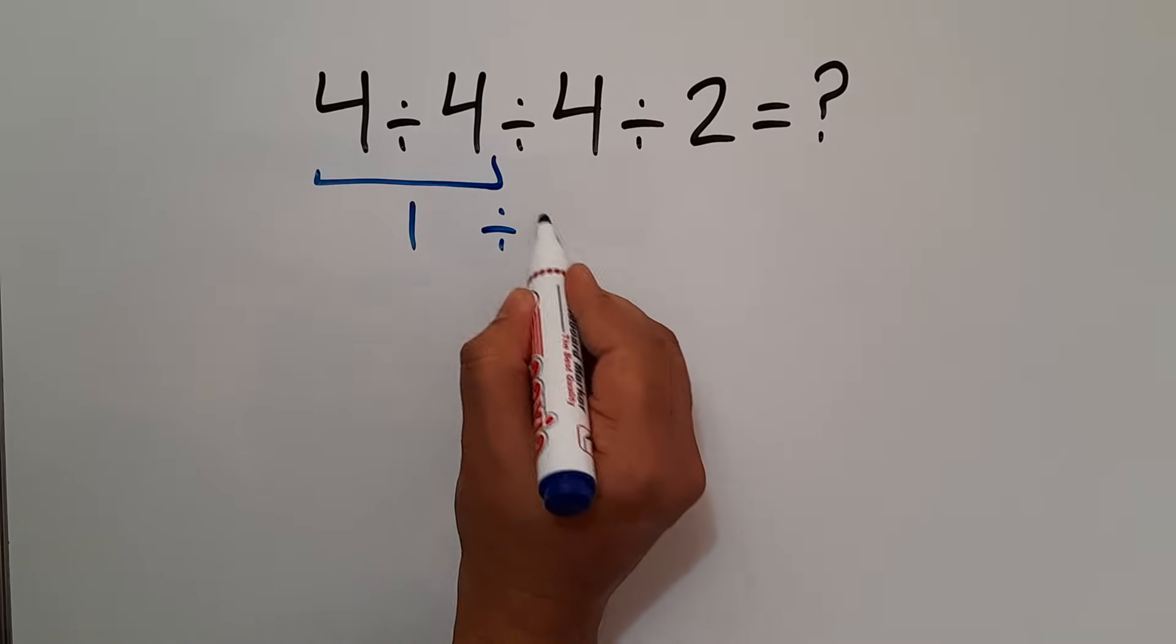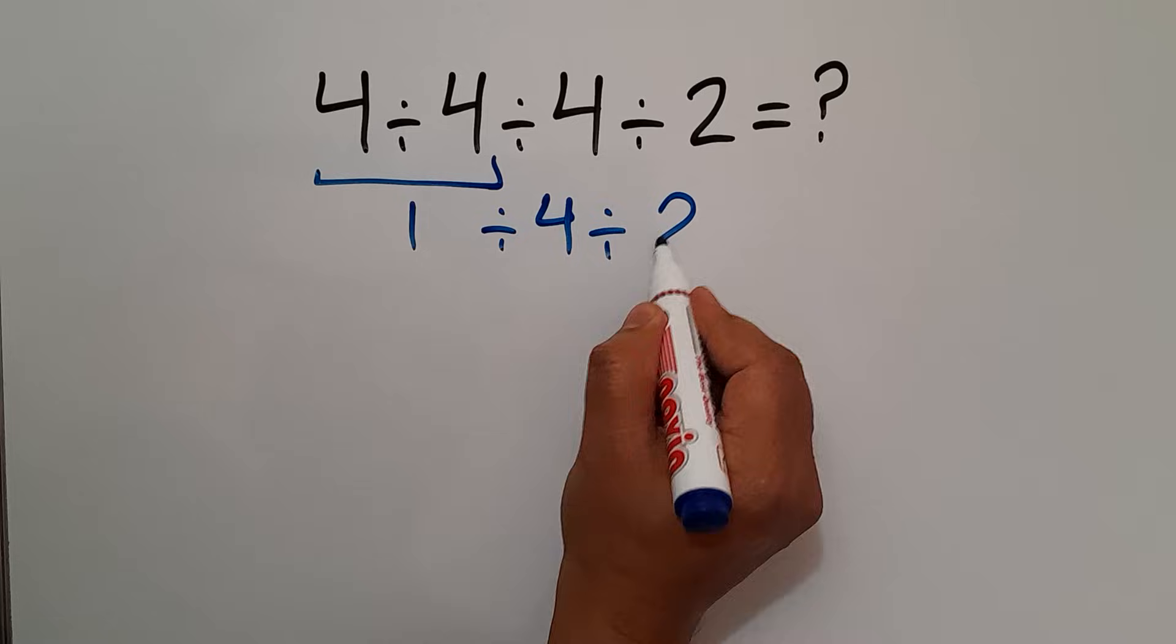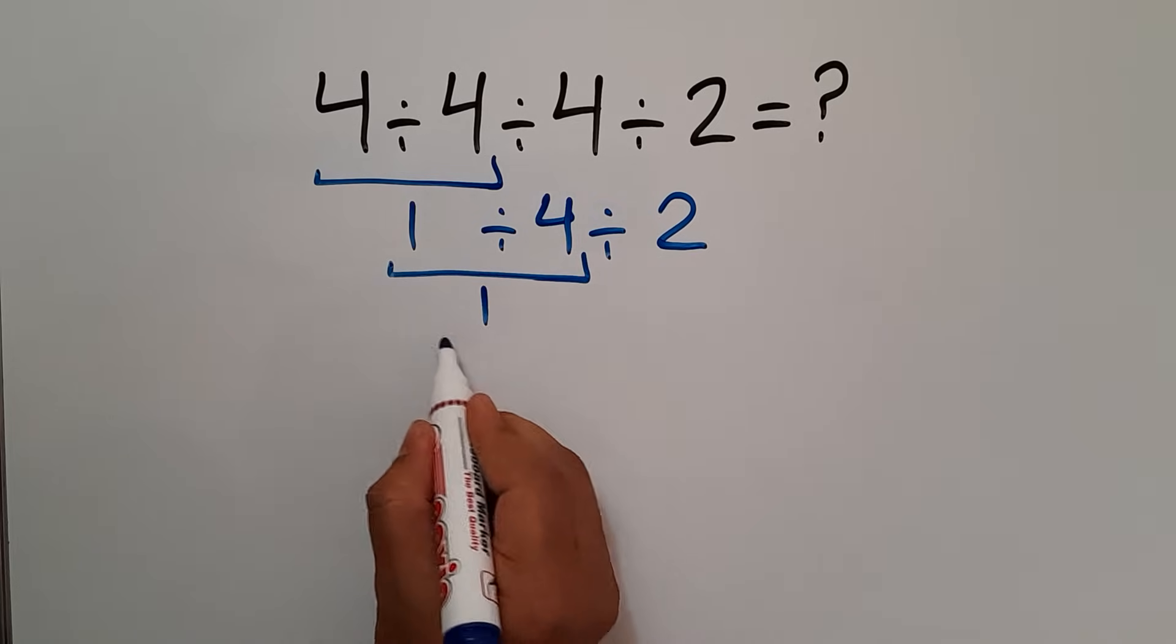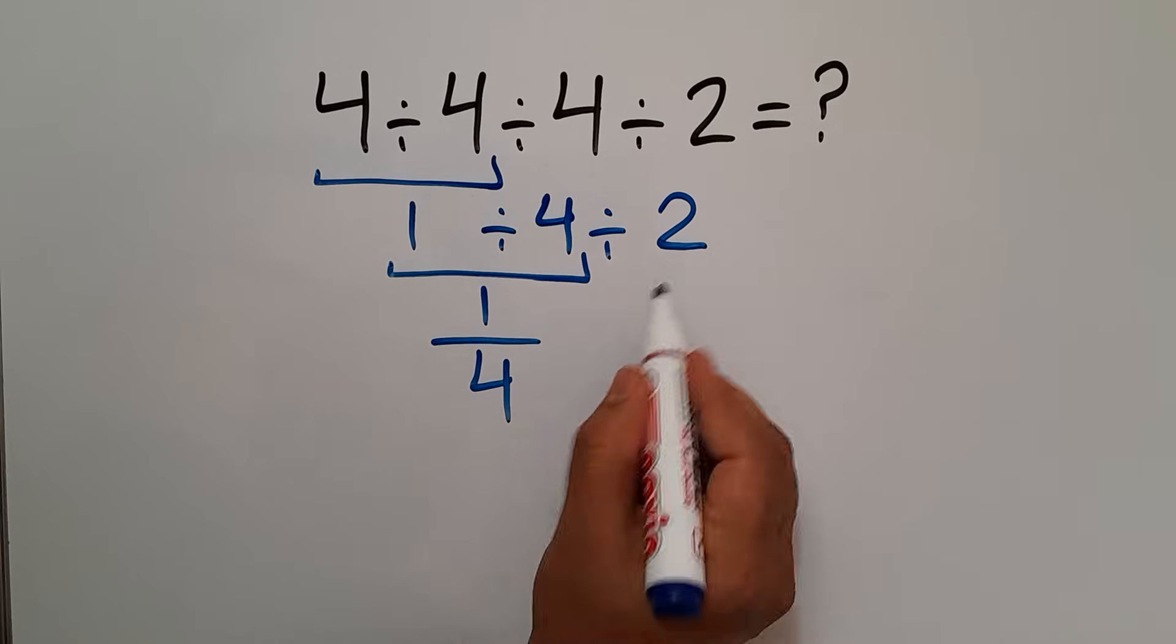So 1 divided by 4 divided by 2. 1 divided by 4 can be written as 1 over 4, then divided by 2.